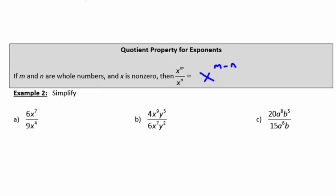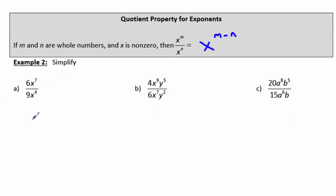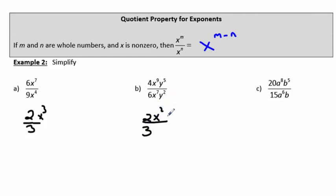This gives us the quotient property for exponents: if m and n are whole numbers and x is non-zero, then x to the m divided by x to the n is x to the m minus n. Let's use that property to simplify. In example a, 6 over 9 reduces to 2 thirds, and x to the 7th over x to the 4th reduces to x to the 3rd. In part b, 4 over 6 reduces to 2 thirds, x to the 9th over x to the 7th reduces to x squared, and y to the 5th over y squared reduces to y to the 3rd. In part c, 20 over 15 reduces to 4 thirds, a to the 8th over a to the 6th reduces to a squared, and b to the 5th over b reduces to b to the 4th.